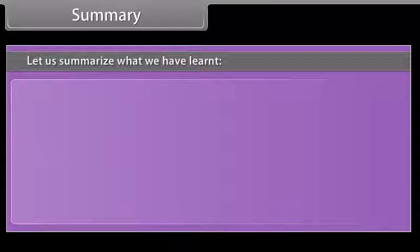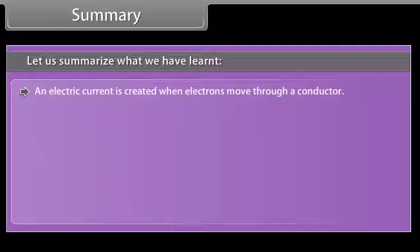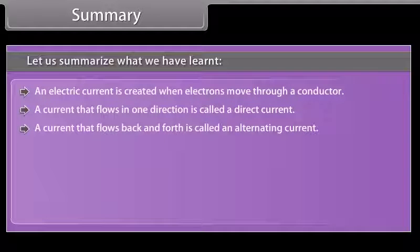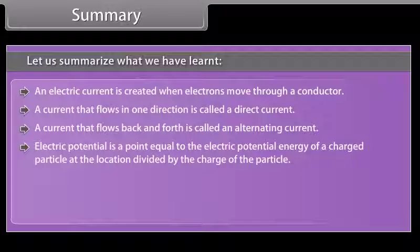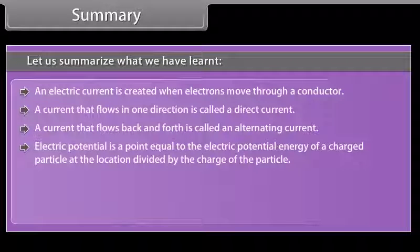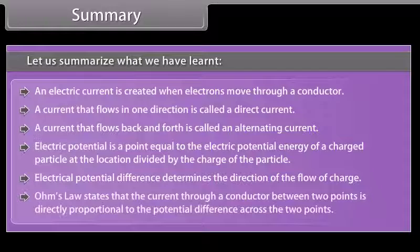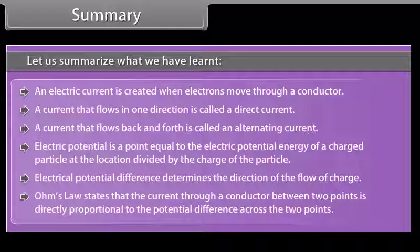Let us summarize what we have learned. An electric current is created when electrons move through a conductor. A current that flows in one direction is called a direct current, and one that flows back and forth is called an alternating current. Electric potential is equal to the electric potential energy of a charged particle at a location divided by the charge of the particle. Electric potential difference determines the direction of the flow of charge.